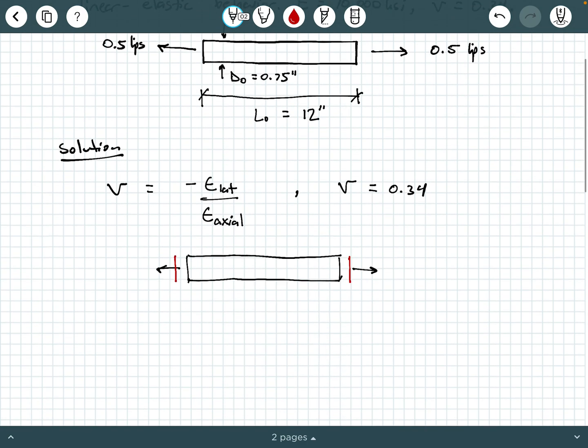Think about what the Poisson effect is doing to this rod. If I have this rod experiencing axial tension, it's going to tend to elongate. But simultaneously, because of the Poisson effect, its diameter is going to decrease. This is our new diameter that is going to be smaller than our original diameter.